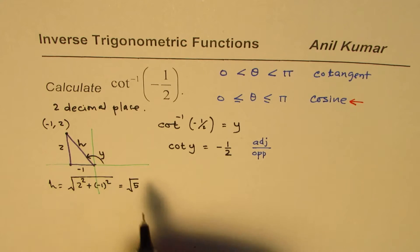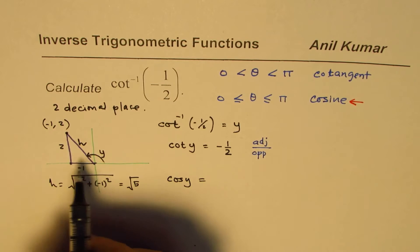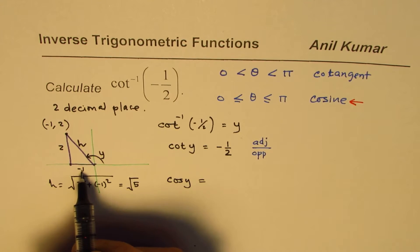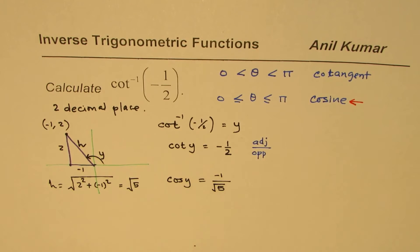Now, from here, can you find what cos y is? Cos y will be adjacent side over height. So, it is minus 1 over square root 5. That is cos y.